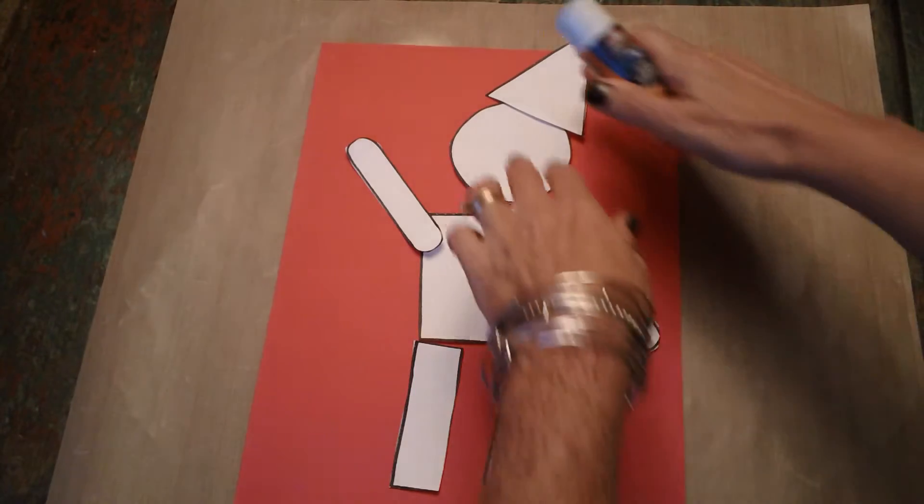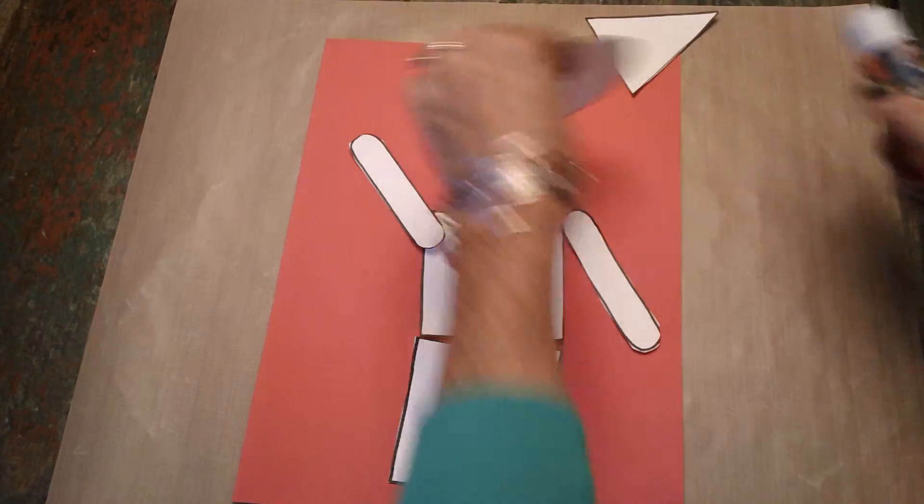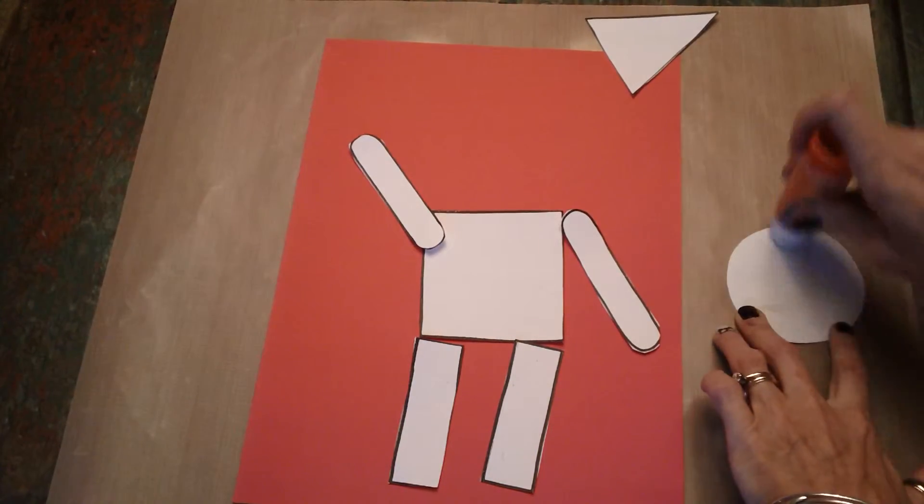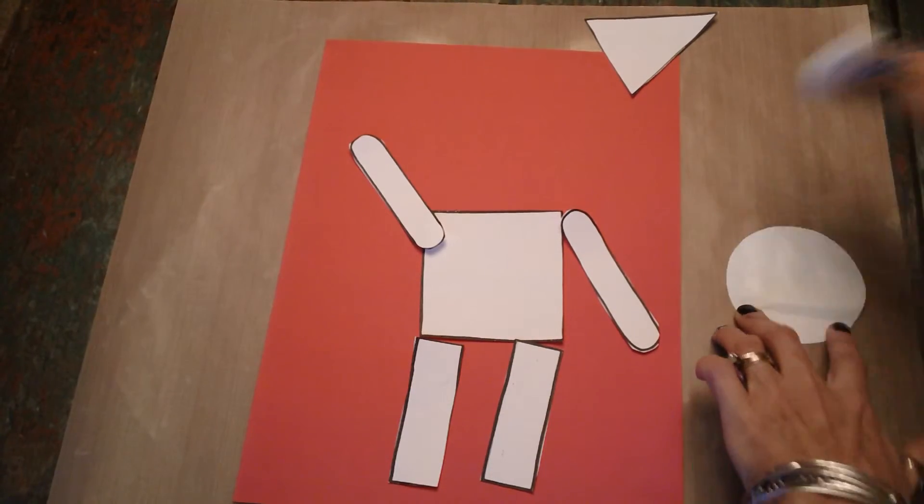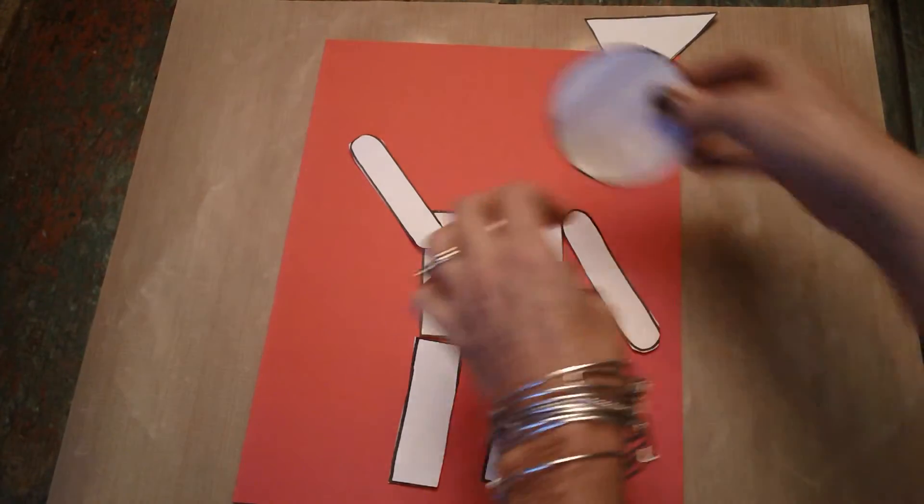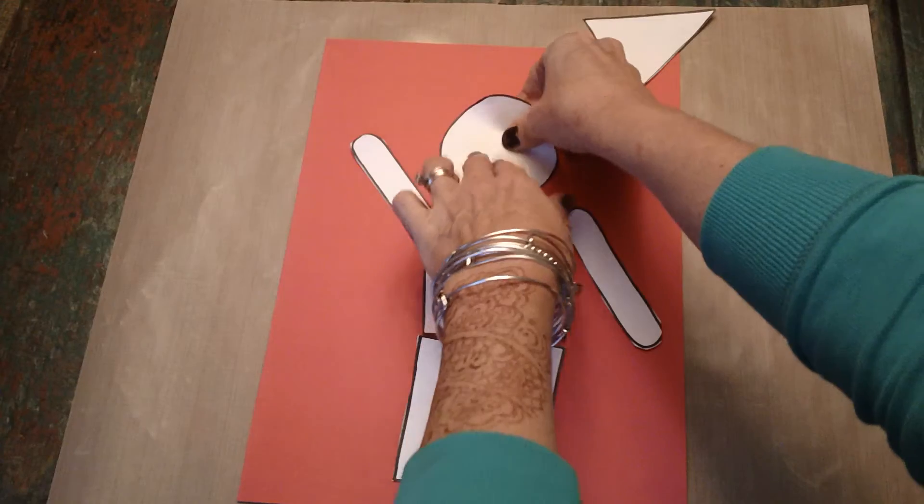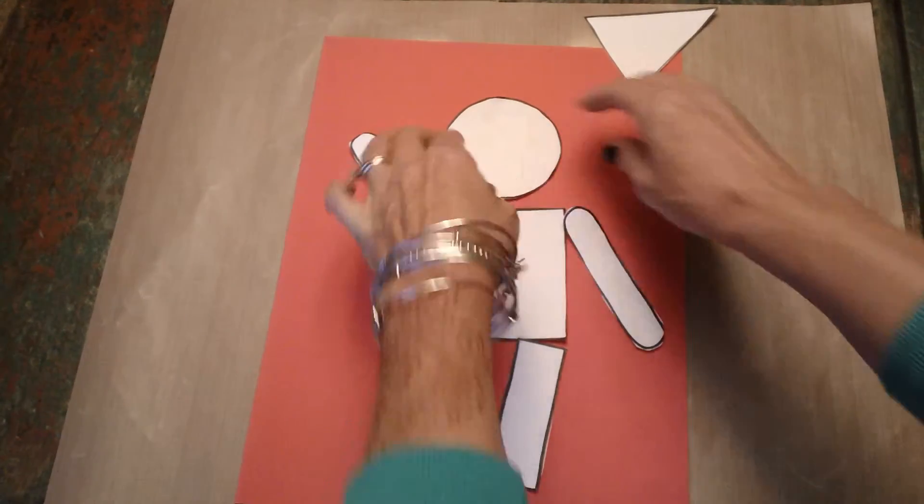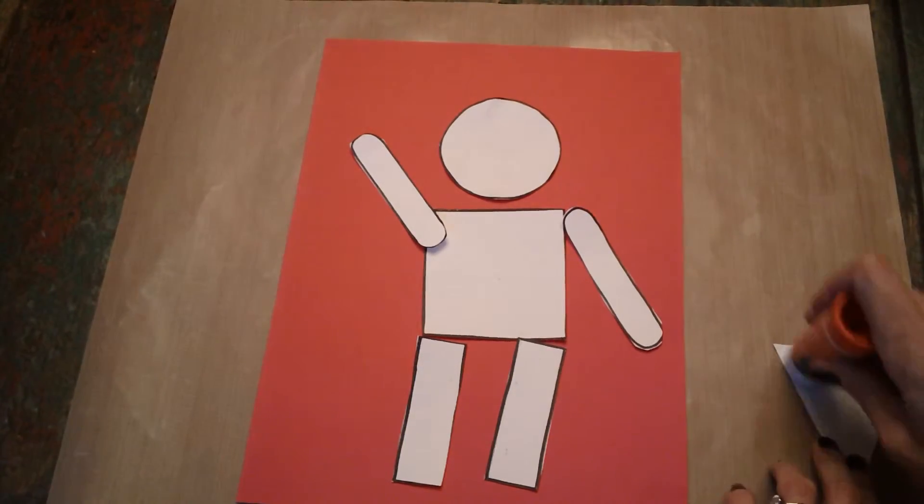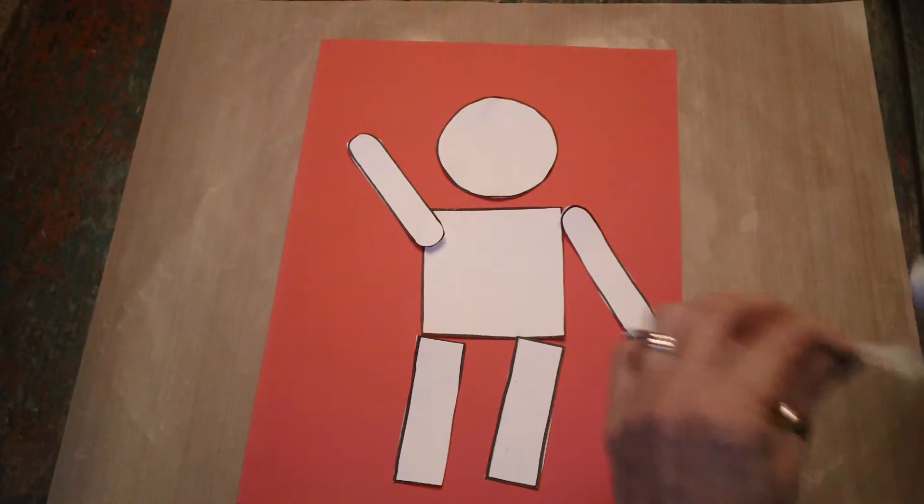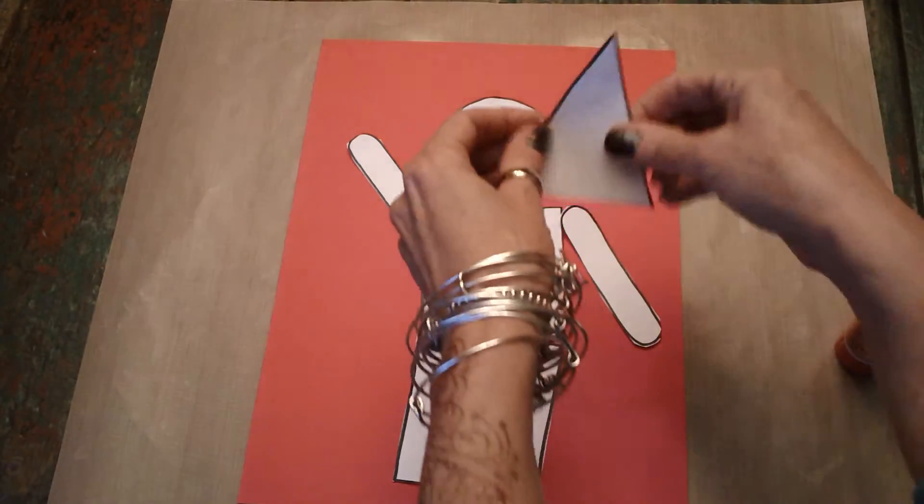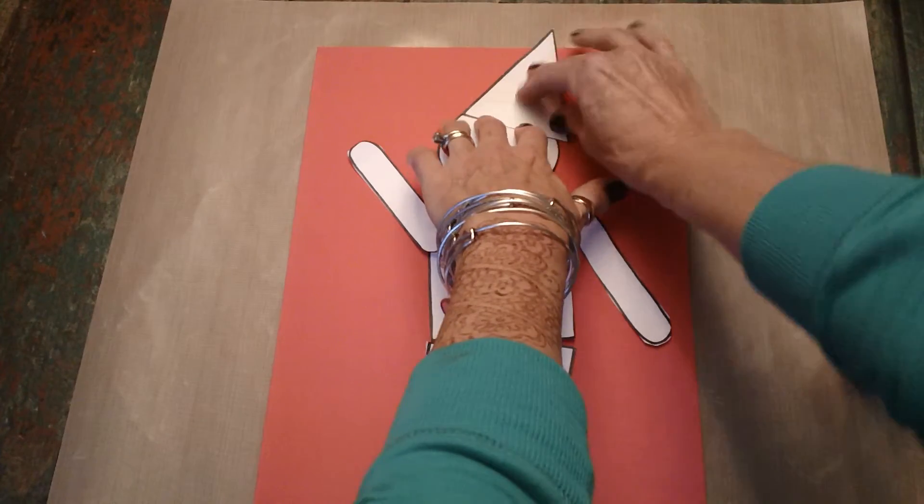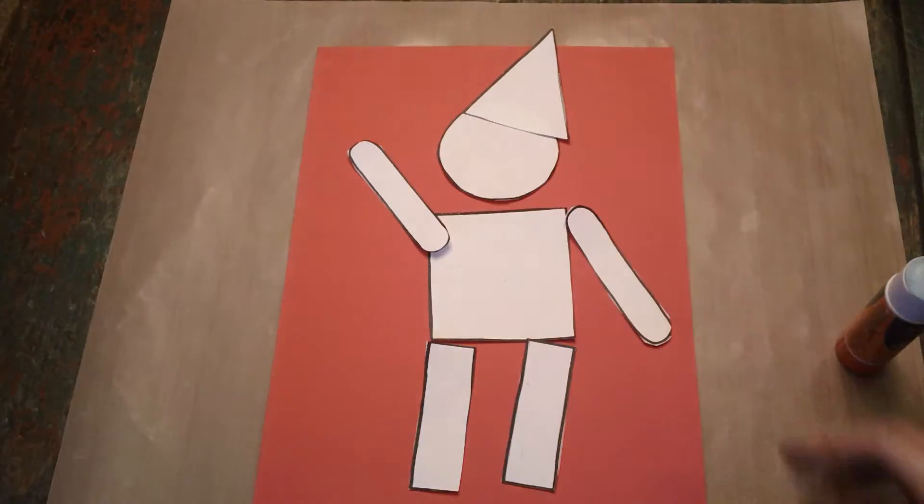Now I have to glue them down. So I'm just going to put some glue on the back and glue down where I want his head to be. And then his hat. Now take your time. You don't have to rush to get this done. We've got plenty of time.